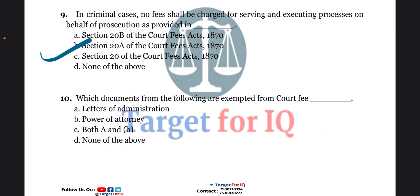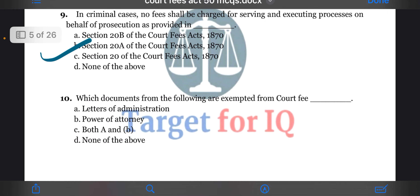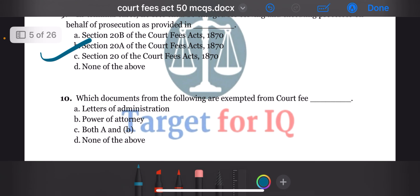Next question: which documents from the following are exempted from court fee? The options are A. Letters of administration, B. Power of attorney, C. Both A and B, or D. None of the above. The correct answer is option C. Both A and B.